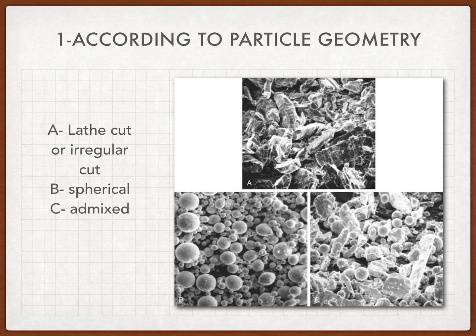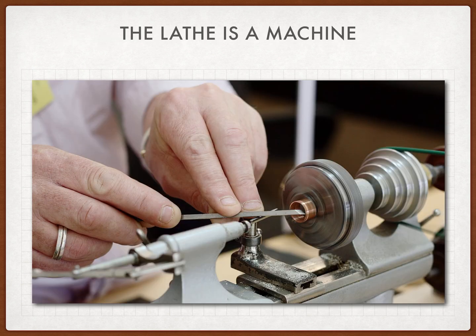The upper or irregular geometry, the lower left which is the spherical geometry, and the lower right which is the admixed or both irregular and spherical geometry. The irregular geometry, the upper one, is also called the lathe cut geometry. The lathe is a machine that has an axis around which a material will rotate and we will cut it symmetrically.